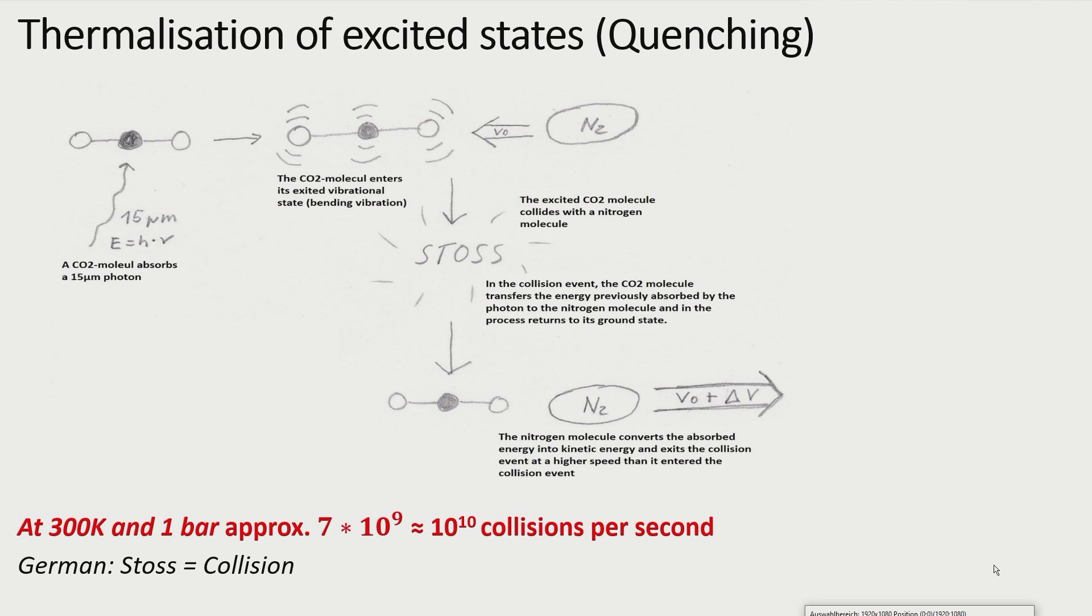The molecule that collided with the excited CO2, converts the energy transferred to it into kinetic energy. This means that the gas molecule involved in the collision with the excited CO2 molecule, picks up speed in the process. Thermal radiation is thus converted into molecular movement, that means heat.